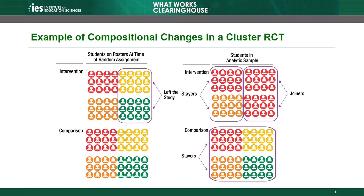Just like attrition in individual-level RCTs, compositional changes in cluster RCTs can result in a biased impact estimate if something other than the intervention is causing the difference between the groups. The presence of joiners in a cluster RCT can produce differences in the composition of the intervention and comparison groups. Therefore, the WWC's standards for cluster RCTs include an assessment of the risk of bias due to joiners. The risk of bias due to joiners is highest when there is reason to suspect individuals may choose clusters based on the availability of the intervention.